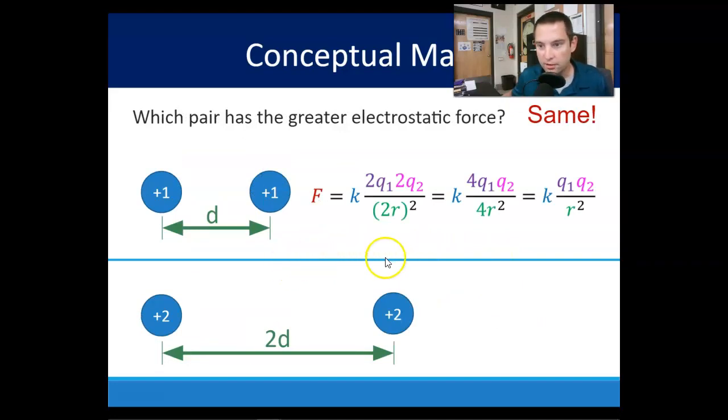Which pair has the greatest electrostatic force? We have charge of one and one with a separation distance d. Meanwhile, we have charge two and two with separation distance of 2d. You can plug those in, and you're going to get the same k times q1, q2 over r squared.